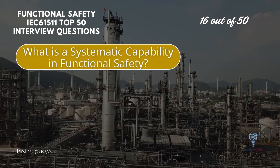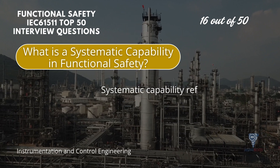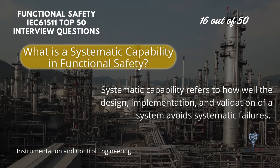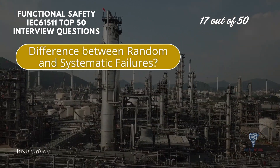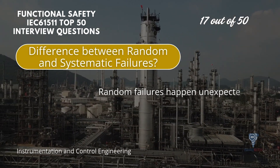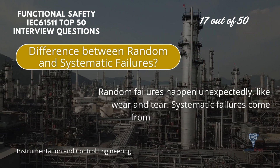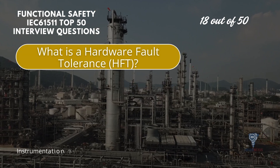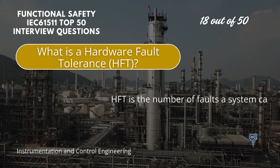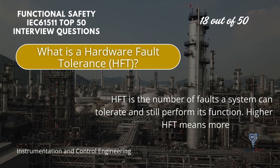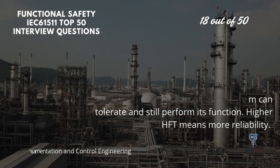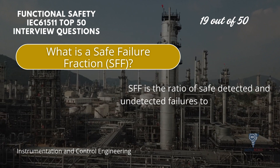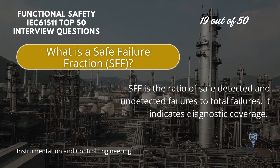Systematic capability refers to how well the design, implementation, and validation of a system avoids systematic failures. Random failures happen unexpectedly, like wear and tear, while systematic failures come from flaws in design or procedure. Hardware fault tolerance, HFT, is the number of faults a system can tolerate and still perform its function — higher HFT means more reliability. Safe failure fraction, SFF, is the ratio of safe detected and undetected failures to total failures, and indicates diagnostic coverage.